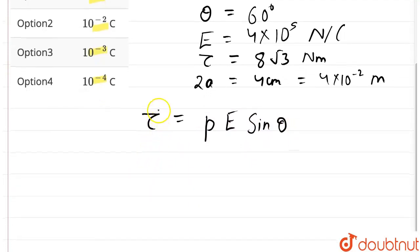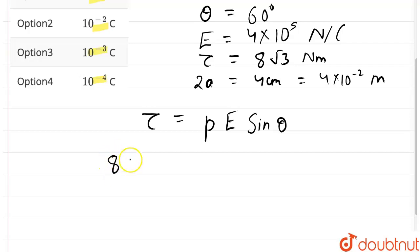Now, here the value of tau is given which is 8√3. As we know, P, the dipole moment is given by the charge Q into the dipole length 2A. Now, the dipole length is 4×10^-2 multiplied by electric field is also given 4×10^5 and sine of 60 degrees.